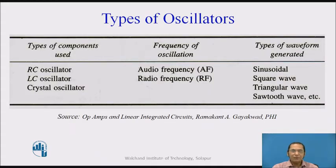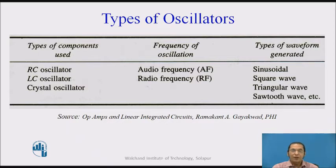Looking at the types of oscillators, they can be classified based upon the components used to design the oscillator, the frequency generated by the oscillator, or the type of waveform generated. Although oscillators generating sinusoidal waveforms are quite common, there are also oscillators generating non-sinusoidal repeated waveforms — such as a square wave, triangular wave, or sawtooth wave.